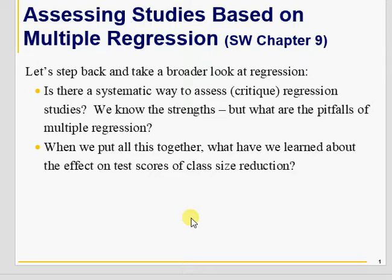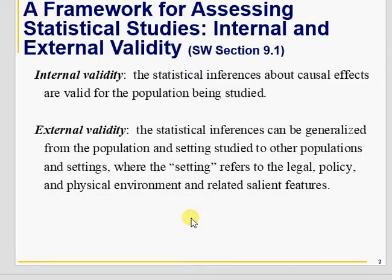Today we are going to discuss another very important concept that is not discussed very much in econometric models: whether the results of your model are valid for the population being studied, or whether those results can also be inferred for some other populations as well. For example, if you have microfinancing in Bangladesh and you are trying to measure its impact on people's lives, can those results be inferred for India, Northern India, or Pakistan? That's external validity. But if those results are valid for Bangladesh — the population from which the sample is taken — then we say those results are internally valid.